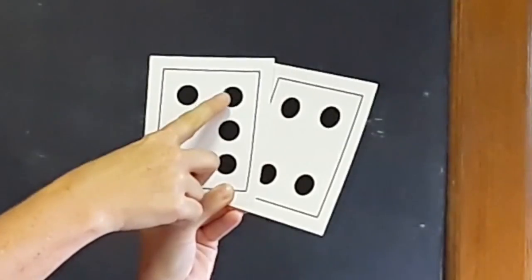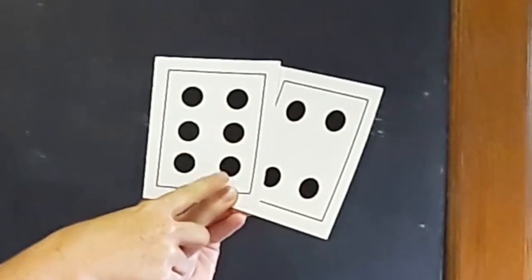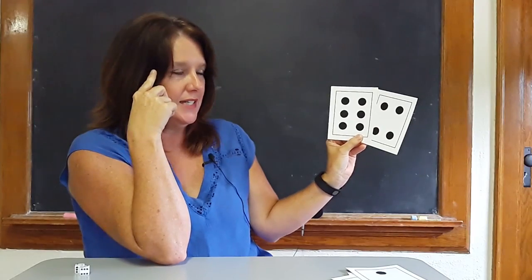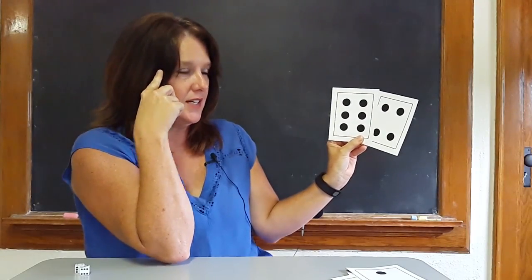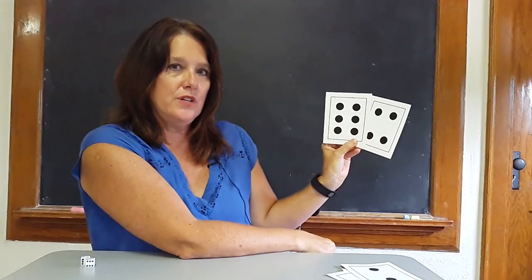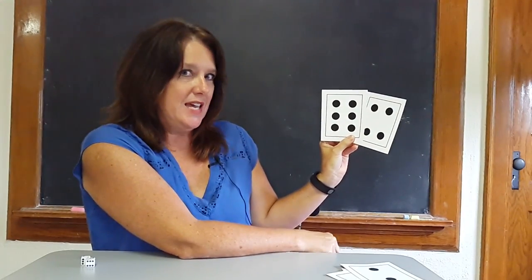Hopefully they notice this one and then we would count it: one, two, three, four, five, six, and put that number in our head. What number's in our head? Six. Start there: six, seven, eight, nine, ten. How many dots are on the cards, boys and girls? Ten.